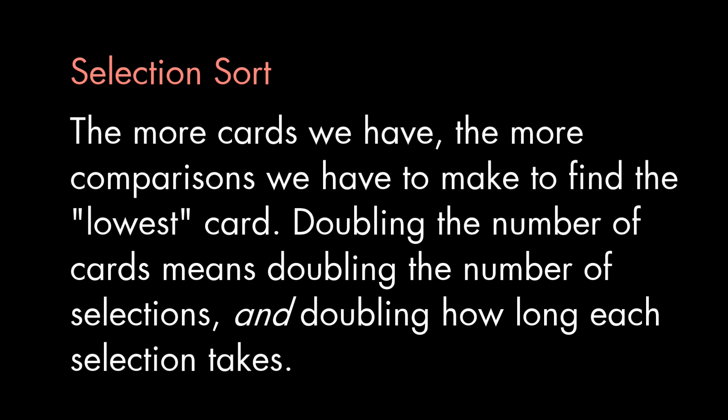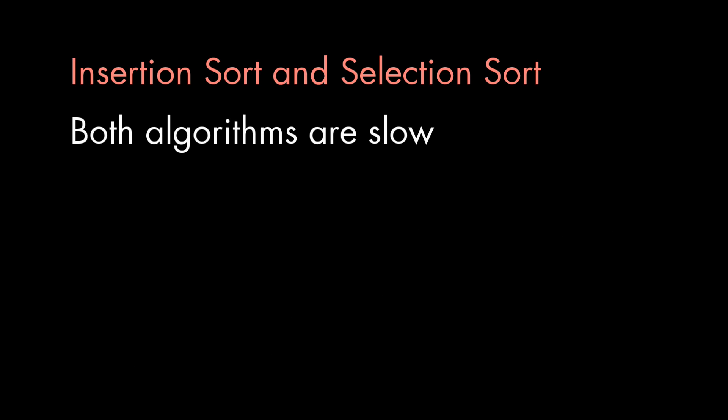And selection sort works out about the same. The more cards we start with, the longer it takes to select the next card. So if we double the number of items, we also double the amount of time it takes to select each item. So the overall work is again about four times as much. So both insertion sort and selection sort are considered slow.